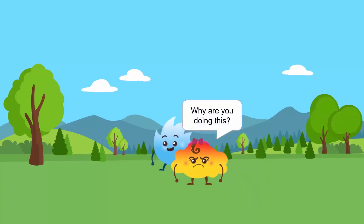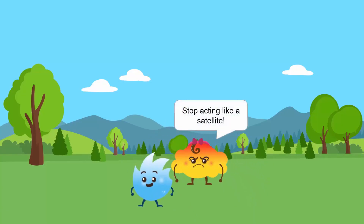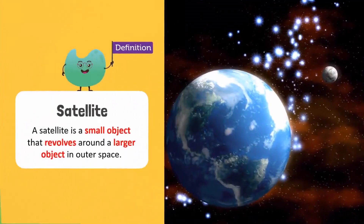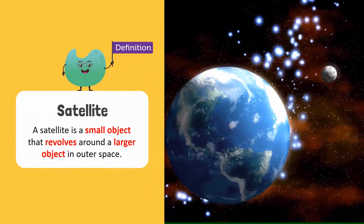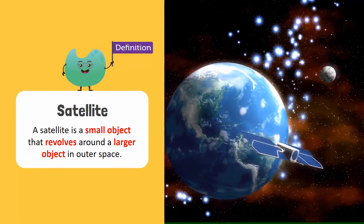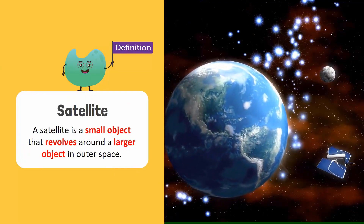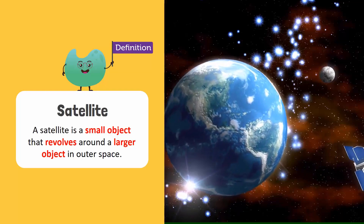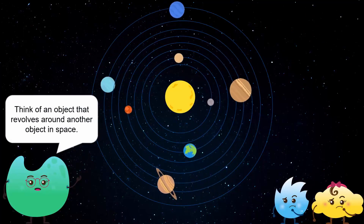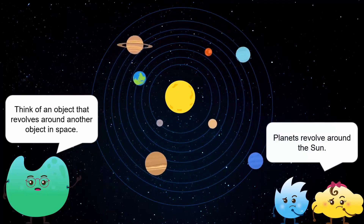Spiky, why are you doing this? Stop acting like a satellite. What is a satellite? A satellite is a small object that revolves around a larger object in outer space. Can you think of an object that revolves around another object in space? Planets revolve around the sun. Yes!